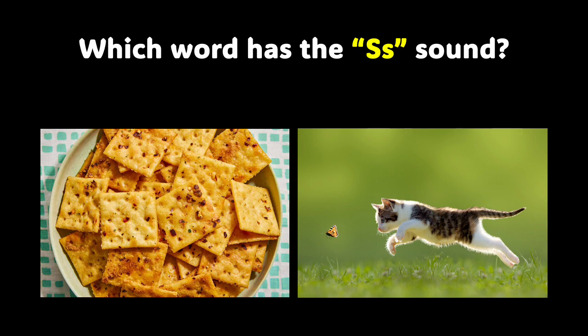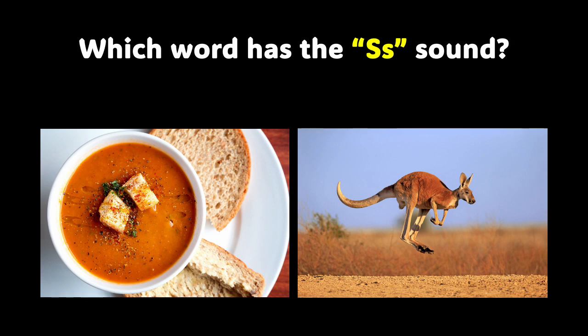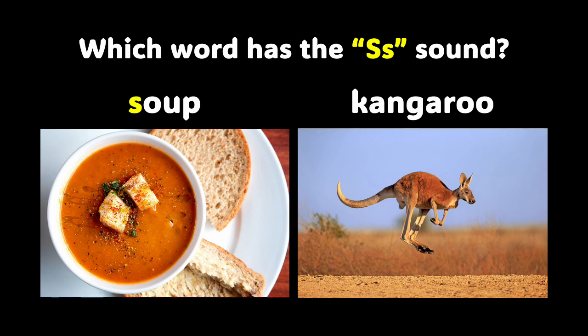What about these two words? Which word has the S sound in it? Crackers ends with the letter S — you were right. And now for these two words: the word S-E-A begins with the letter S. Great job. Here is our last comprehension slide. Look at your screen and tell me which of those words has the S sound. It is soup — soup starts with the letter S.